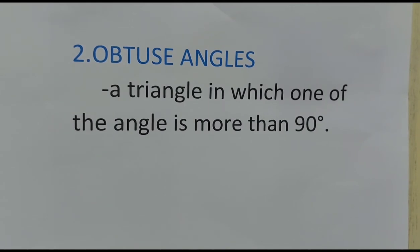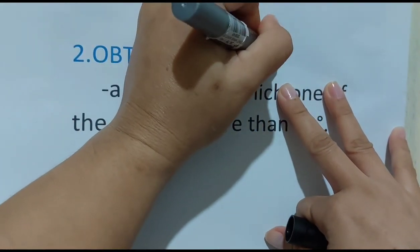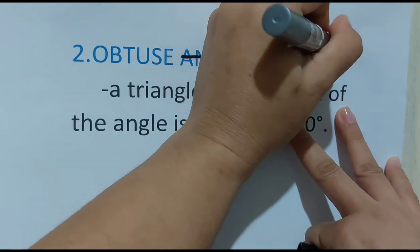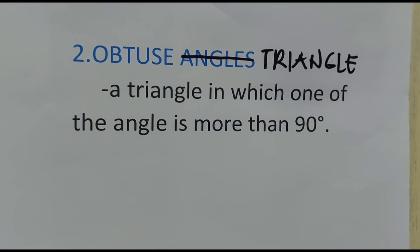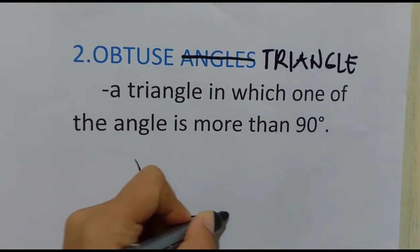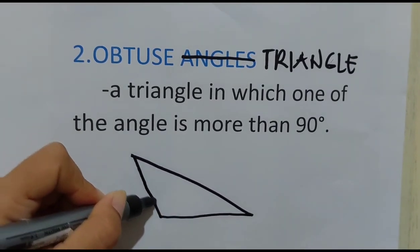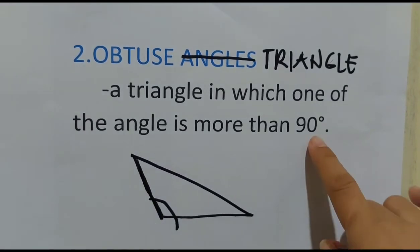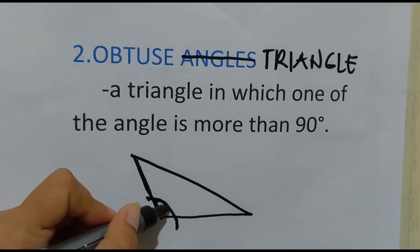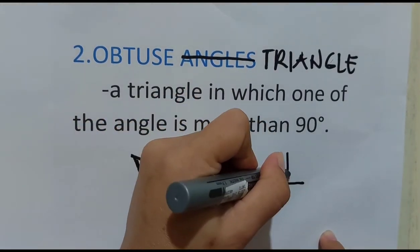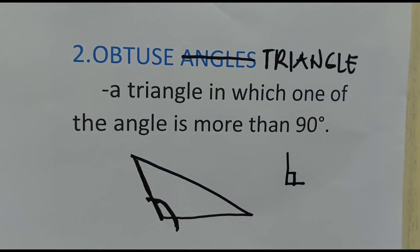Another oblique triangle is the obtuse triangle — a triangle in which one of the angles is more than 90 degrees. When we say obtuse angle, it measures more than 90 degrees. Since 90 degrees is a right angle, if an angle goes beyond that, more than 90 degrees, then that triangle is considered an obtuse triangle, and that is one of the oblique triangles.